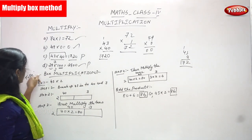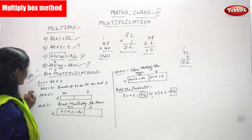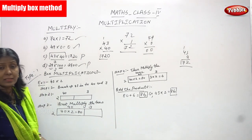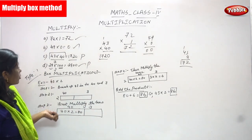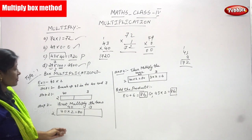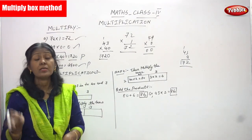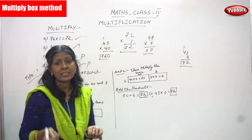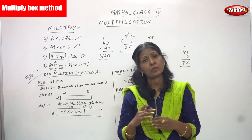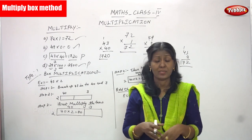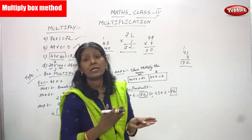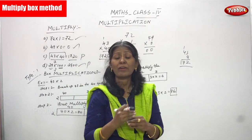Box multiplication, type 1. Example: 143 into 2. There are some steps for box multiplication — you have to follow them step by step. Box multiplication means you have to write everything — the factors and the product — in boxes. That is called box multiplication. Now we are going to solve the problem step by step.